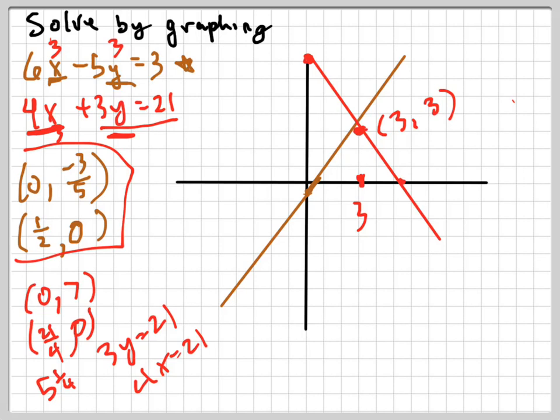3 times 6 is 18 minus 3 times 5, which is 15. 18 minus 15 is 3. 3 times 4 is 12 plus 9. 12 plus 9, right, because I'm plugging in 3 for the y and the x is 21. So that did work. 3 comma 3 was my solution.